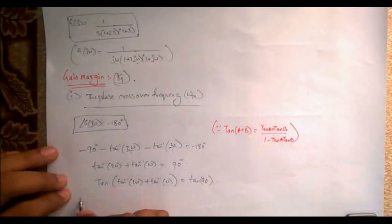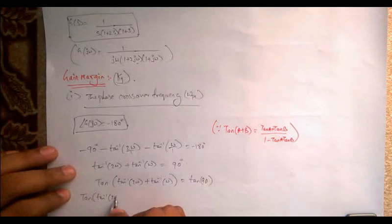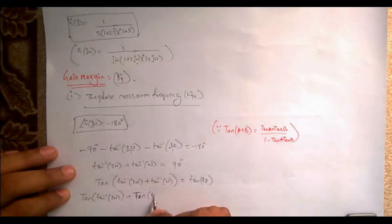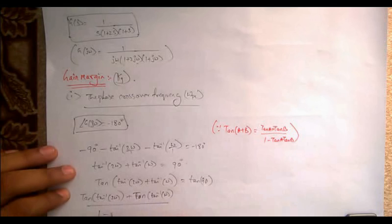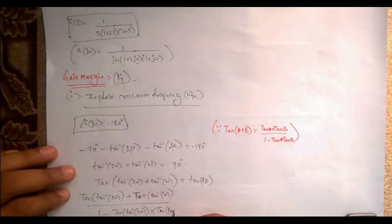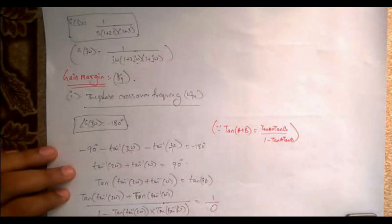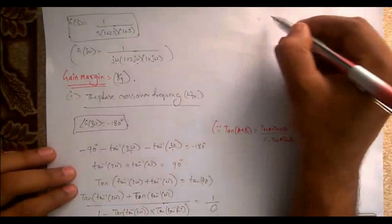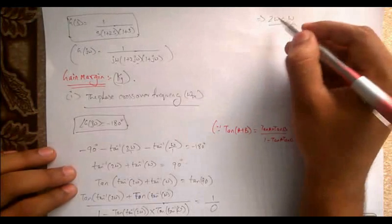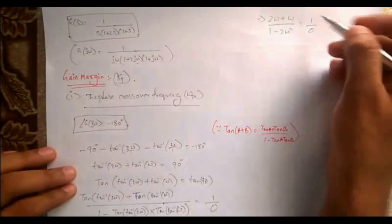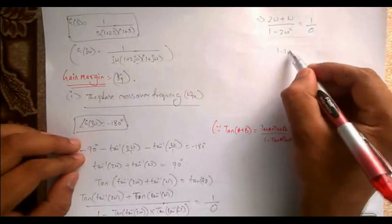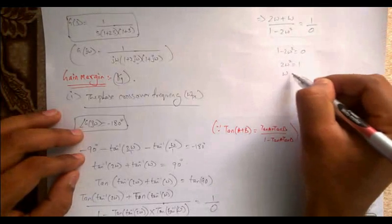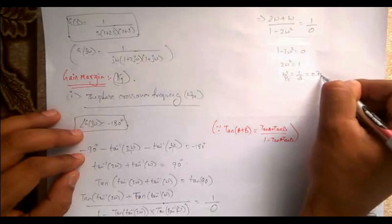Since tan 90° = infinity, which equals 1/0, the denominator must equal zero: 1 - 2ω² = 0, giving 2ω² = 1, so ω = 1/√2. Therefore the phase crossover frequency ω_pc = 0.707 rad/s.